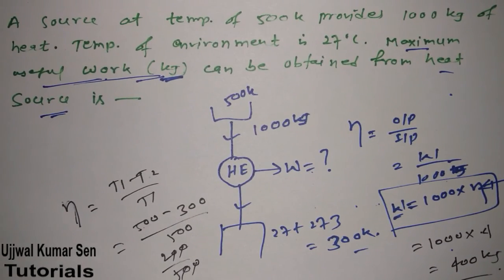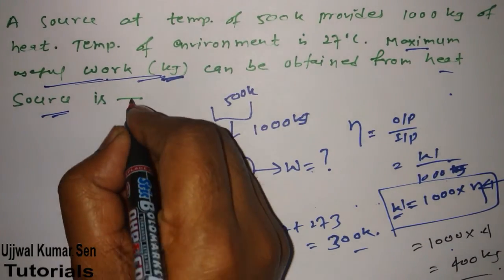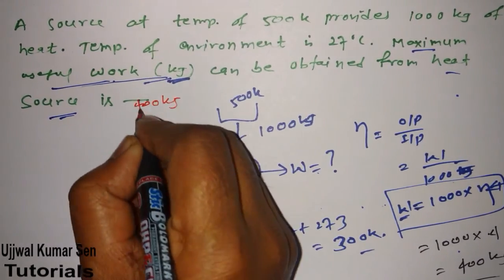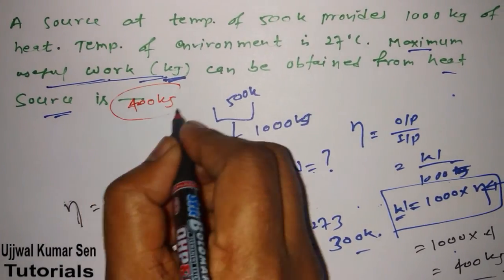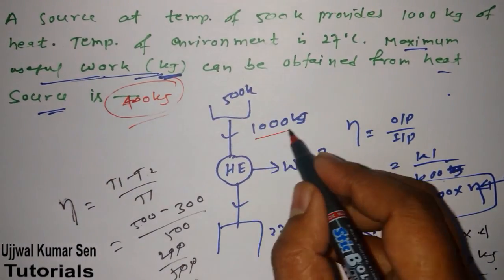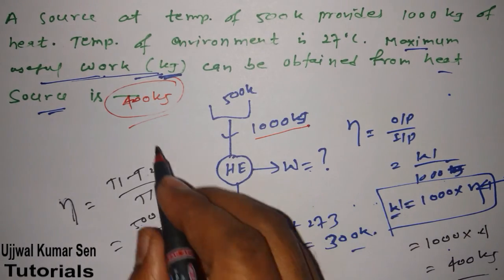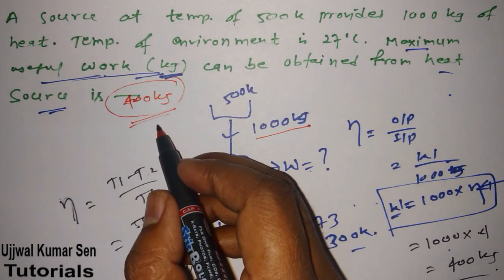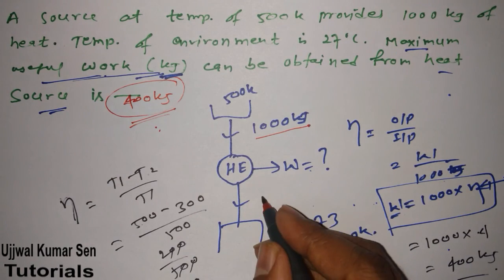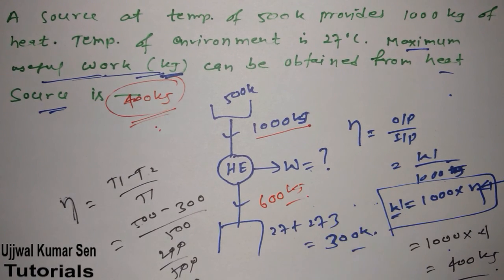As this is a numerical type question, the answer is 400 kilojoules. The input is 1000 kilojoules, work done is 400 kilojoules, and the reject is 600 kilojoules, because incoming equals outgoing. This is all about the heat engine question from GATE previous year.